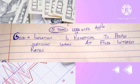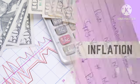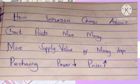Next, we are going to look at how inflation comes about. In most cases, inflation comes about when the government prints more money. This leads to more supply, which eventually causes the value of money to drop, which in turn causes prices to increase as the purchasing power goes down.